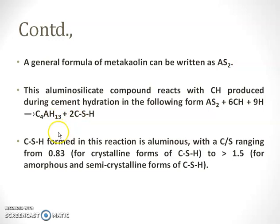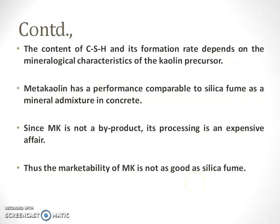The CSH formed in the reaction is aluminous, with the C/S ratio ranging from 0.83 to 1.5. If it is 0.83, the CSH is in crystalline form. When it is in the 1.5 range, it is in amorphous and semi-crystalline form. The CSH gel will be in different forms based upon this range. The content of CSH and its formation depends on the mineralogical characters of the kaolin precursor.